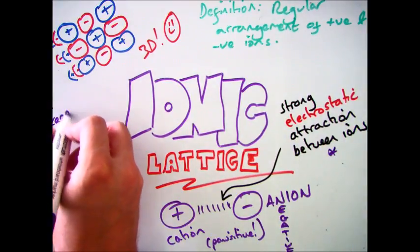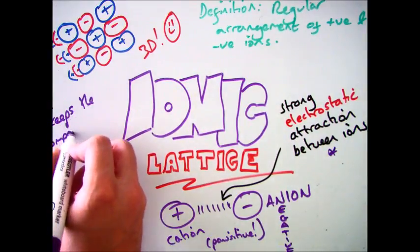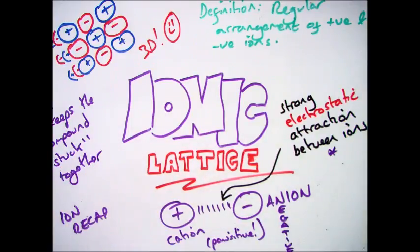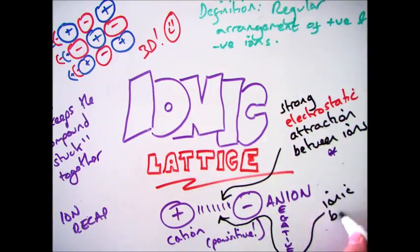So your positive cations, your negative anions, that force of attraction is called a strong electrostatic attraction between the ions. And that is what keeps the ions stuck together. That's what makes it solid. And that is what forms your ionic bond.